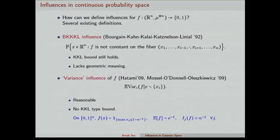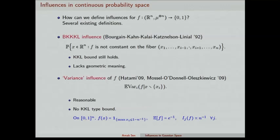There is another candidate which is very reasonable, called the variance influence. Hamid talked about this influence in his talk. You fix all but the i-th coordinates, look at the function as a function only of the i-th coordinate, take the variance of this one-dimensional function, and then integrate out the rest. This is a very reasonable definition, but unfortunately there is no KKL-type bound for it. For example, on the n-dimensional unit cube with the uniform measure, if you define the indicator function of the set where the max is at most 1 minus 1/n, the measure of this set is roughly constant but all influences are of order 1/n.